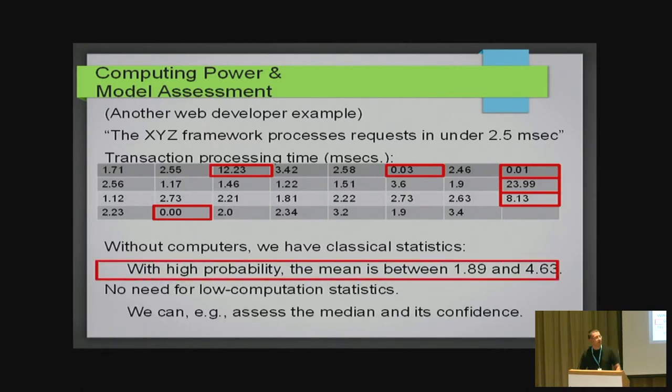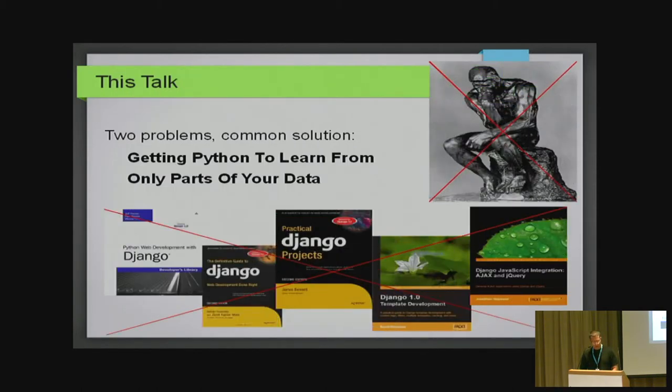We might not want to apply these closed form formulas here. Instead we might want to use something like the median or the middle value which is more robust. But we have all of this computational power at our disposal nowadays. So, these two problems might look different, but they're solved by a common approach which is getting Python to learn from only parts of your data.